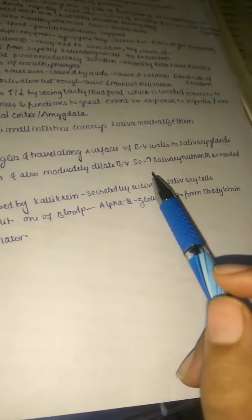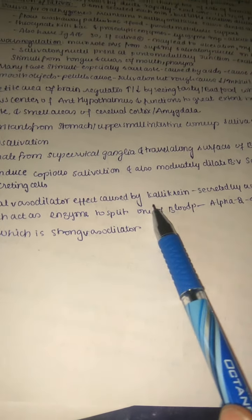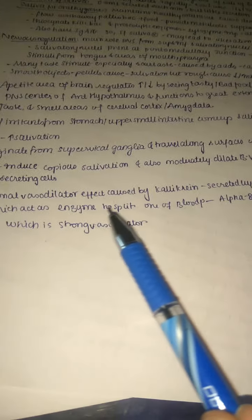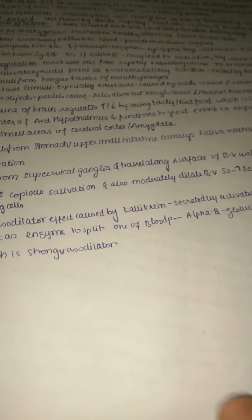The appetite area is located primarily in the parasympathetic system, in the anterior hypothalamus, and responds to signals from taste and smell areas of the cerebral cortex or amygdala. If irritants from the stomach or upper small intestine rise, saliva may neutralize them. The parasympathetic nervous system induces copious salivation and dilates blood vessels, increasing salivary nutrients for secretory cells. An additional vasodilator effect is caused by kallikrein, secreted by activated salivary cells, which acts as an enzyme to split alpha-2-globulin in blood to form bradykinin — a powerful vasodilator.